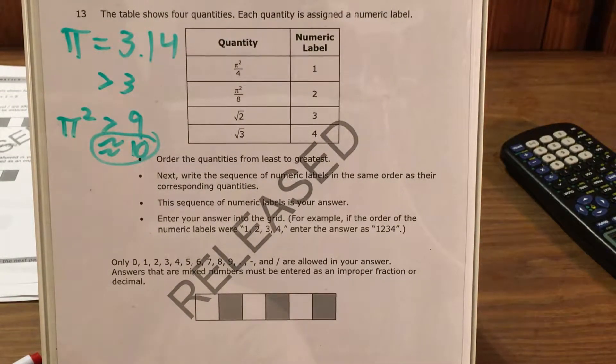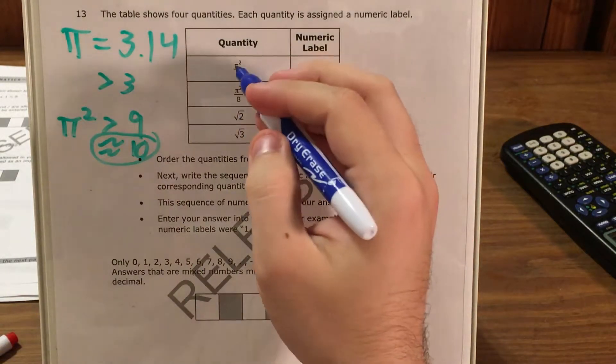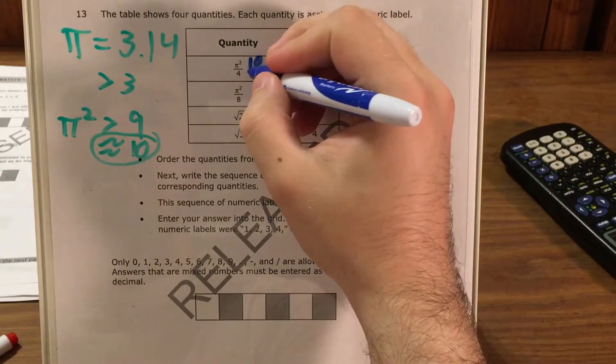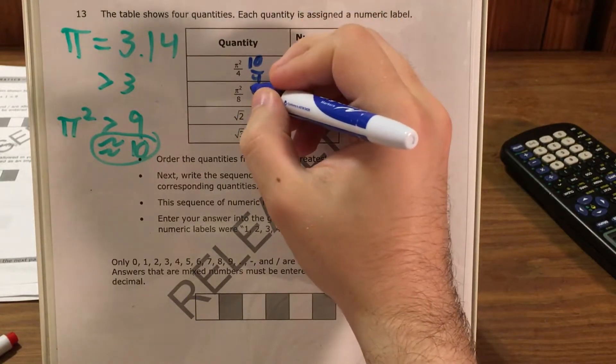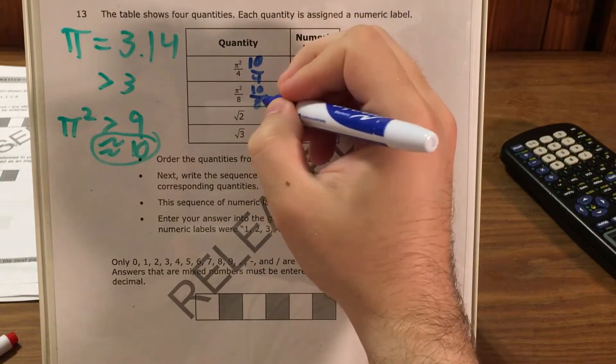Pi squared is close enough to 10 that we can work with it for a problem like this. So pi squared divided by 4, I'm going to call 10 divided by 4. Pi squared over 8, I'm going to call 10 divided by 8.